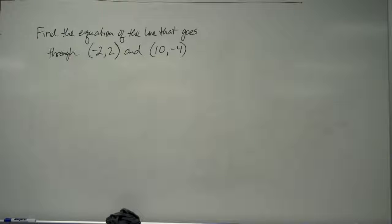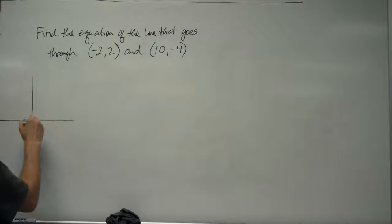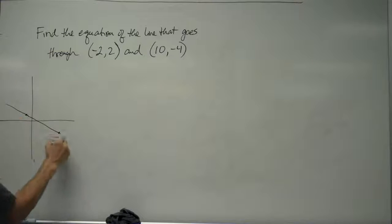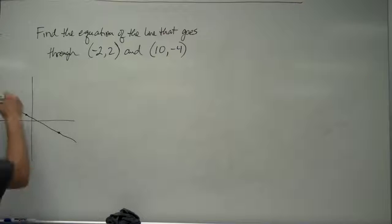One thing that I can do to just kind of get an idea of what this is going to be like is just make a really fast little sketch. (-2, 2) is going to be like right there. (10, -4) is going to be like right there. So, my line is going to look kind of like this. I can see right now that my slope is going to be negative, and my y-intercept is going to be somewhere kind of close to the origin.